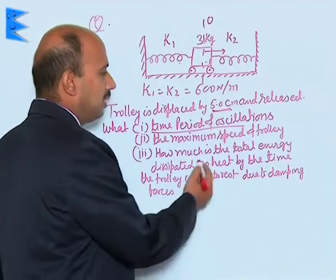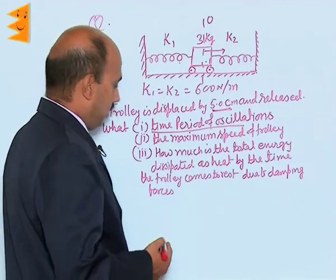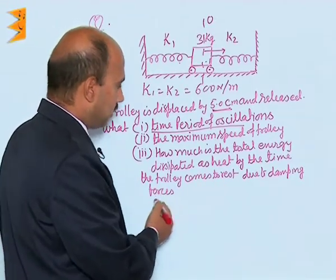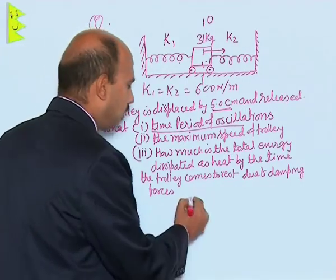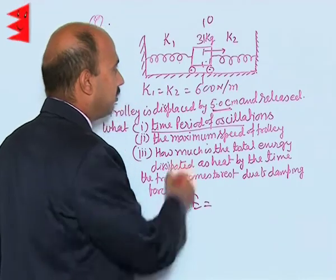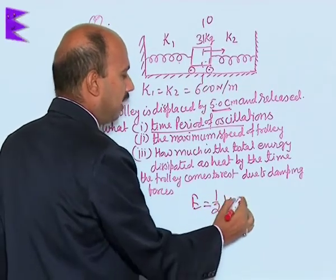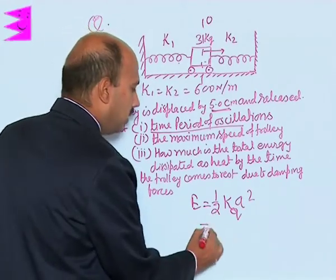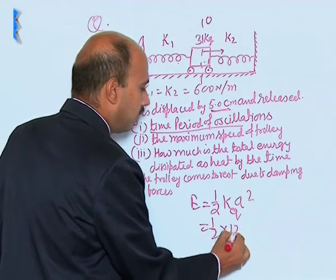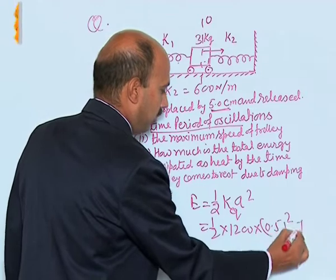Now see the third part, how much is the total energy dissipated as heat by the time the trolley comes to rest due to damping forces. The total energy of this oscillating trolley is given to you here half k A square, that is k equivalent, and A is amplitude. That is equal to half into 1200 into 0.05 whole square joule.